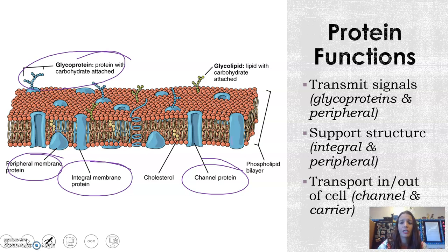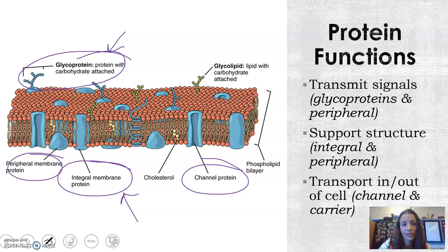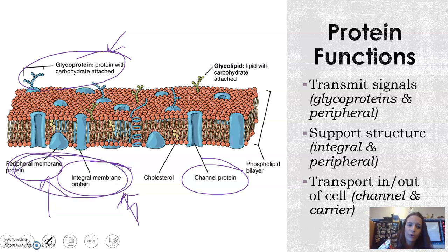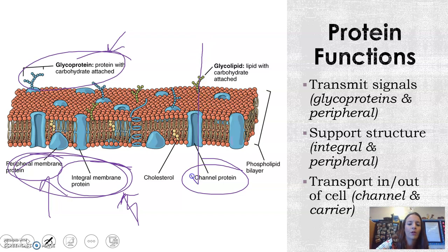Looking at the picture, you can see the glycoprotein, channel protein, integral protein, and peripheral protein. The glycoproteins and peripheral proteins help with signals — the glycoprotein has a little antenna coming out the top. The integral and peripheral proteins also help with structure because they're located throughout the membrane. And of course, the channel and carrier proteins help with transport, moving substances from one side of the cell membrane to the other.